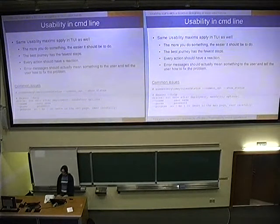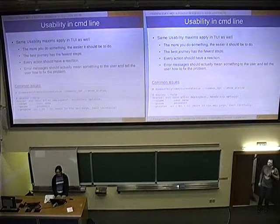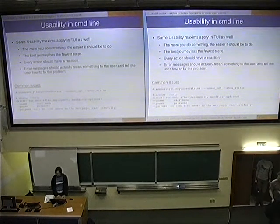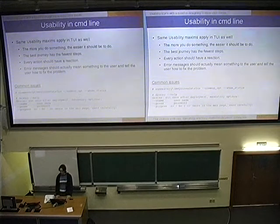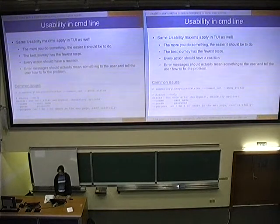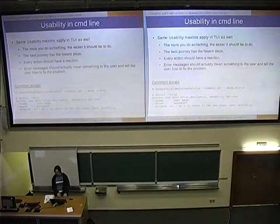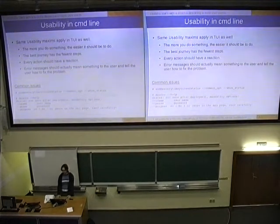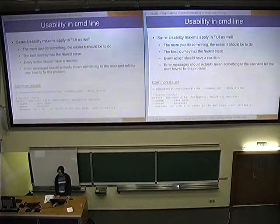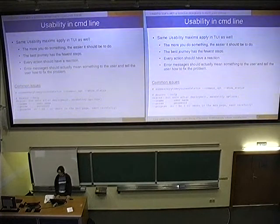Usability in command line: the same principles that work in GUI should apply to text user interfaces. For example, consider a tool you run every time you need status, with a common option and a show-status option. What might be wrong? Since the tool is expected to run often, the name should probably be shorter. Also, why explicitly define a common option? The common option should be the default. And the tool should probably show status by default, because users expect to know what's happening.